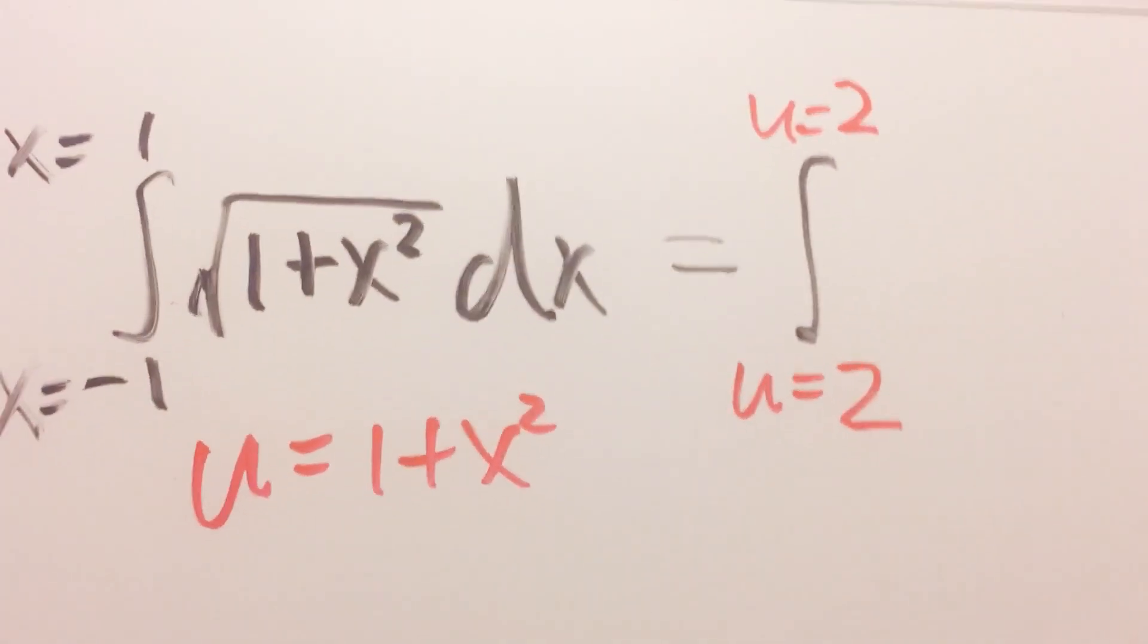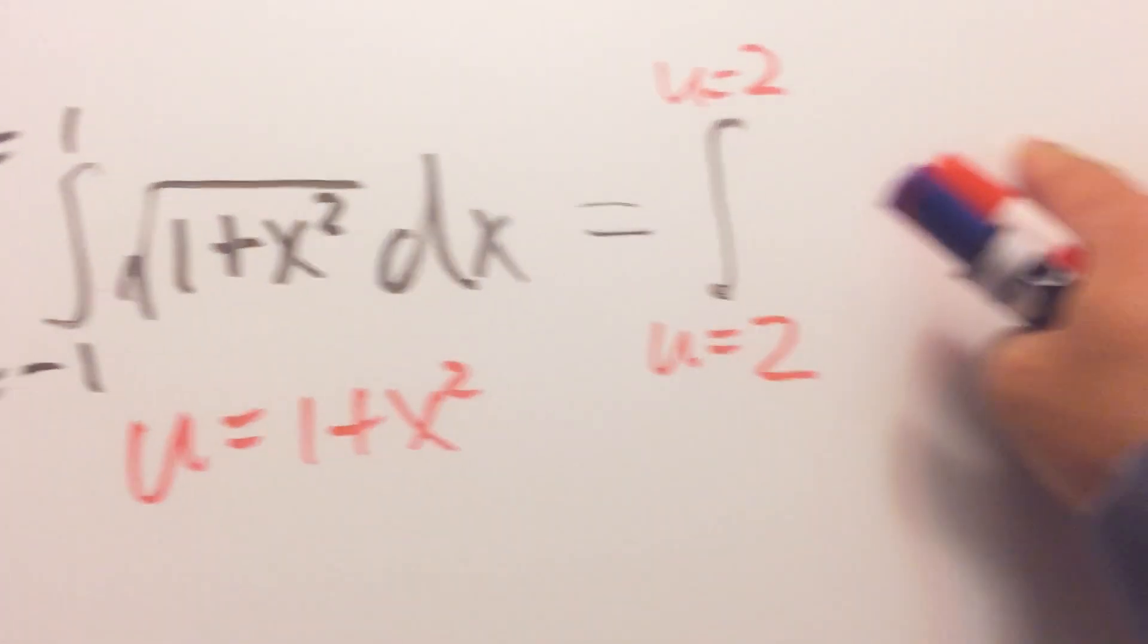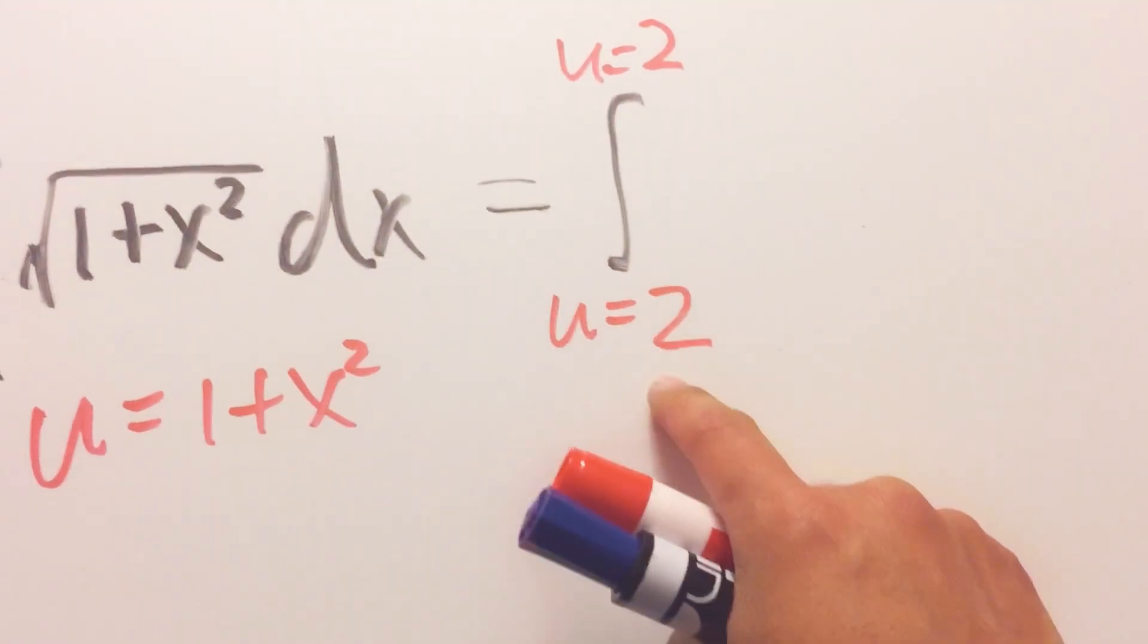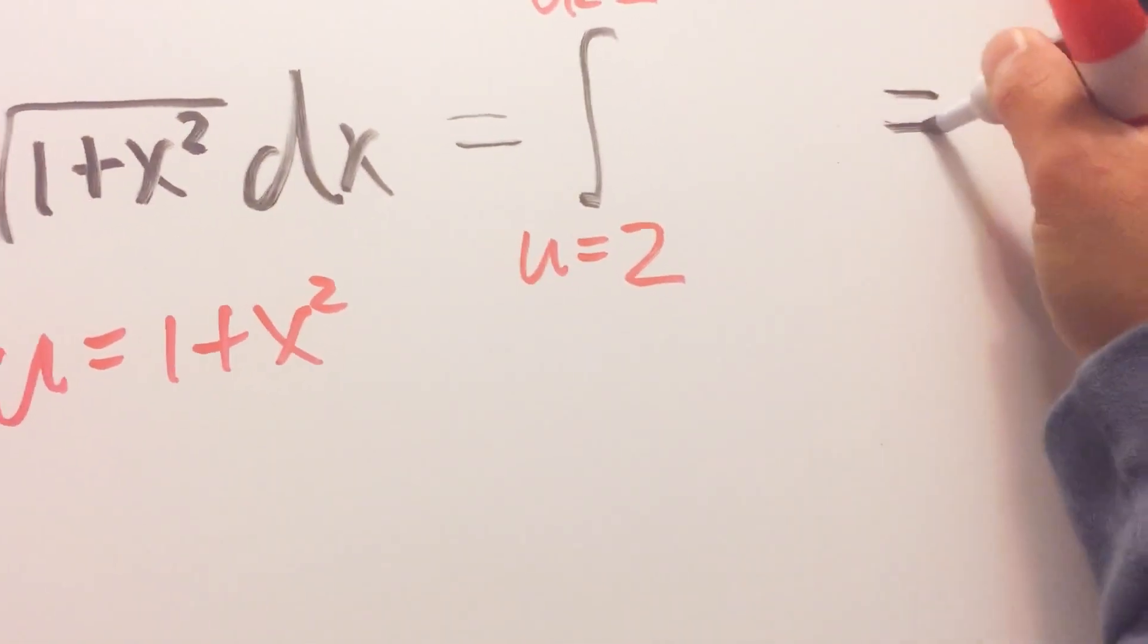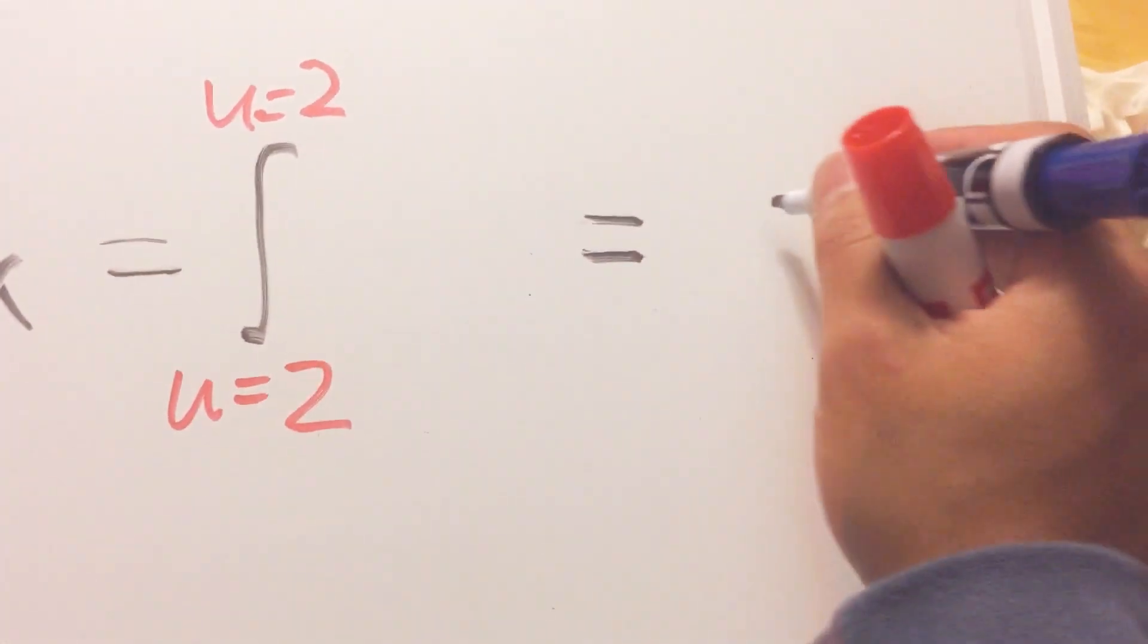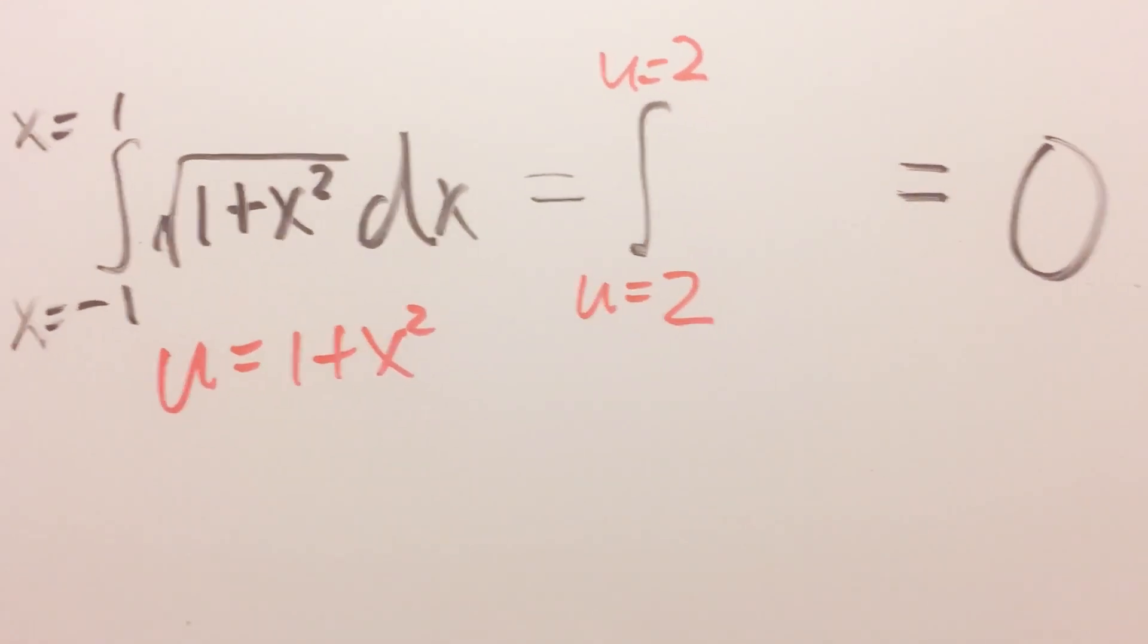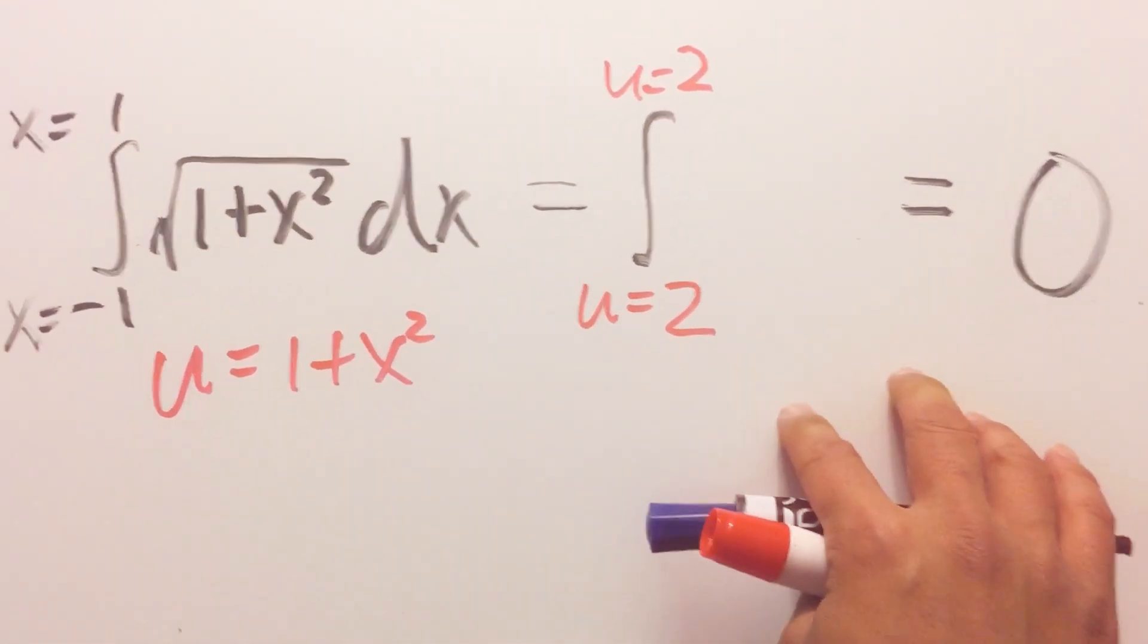And now here's the issue, you see right here I don't know what this is going to be right, but this is the integral from 2 to 2 so I'm going to say that this right here is equal to 0. And now here is the question, true or false, do you guys agree with this or not?